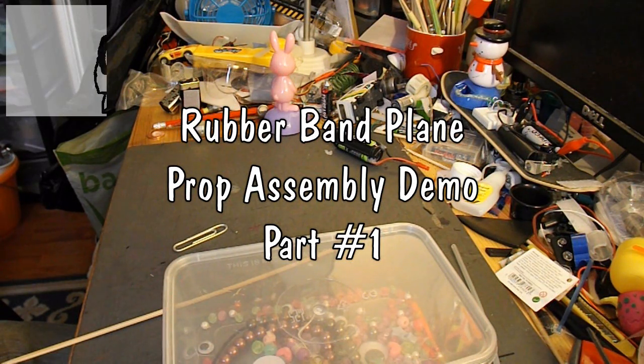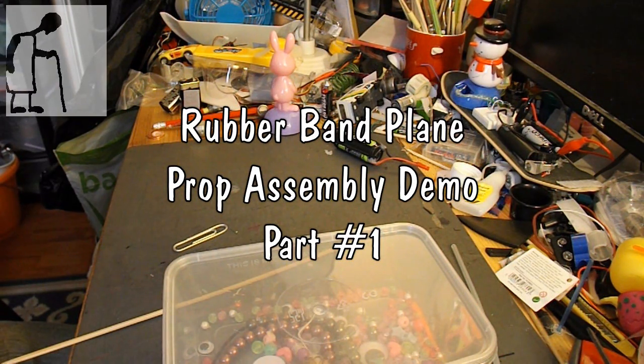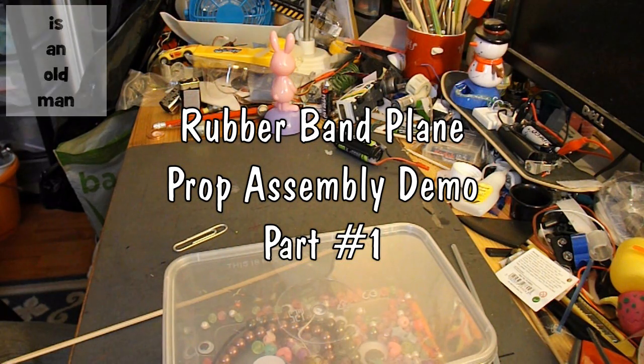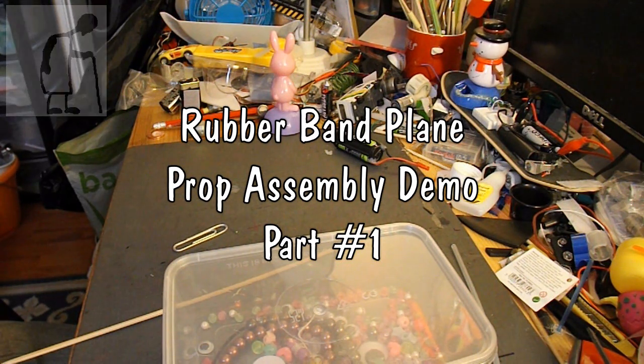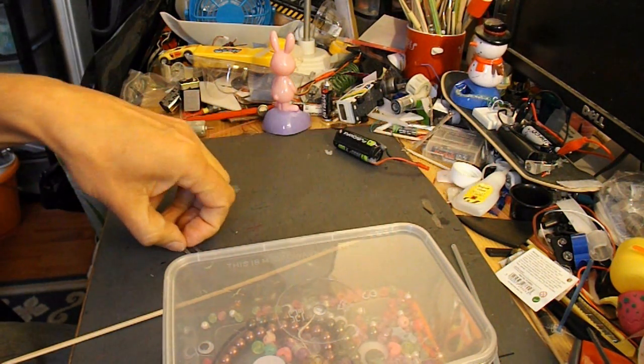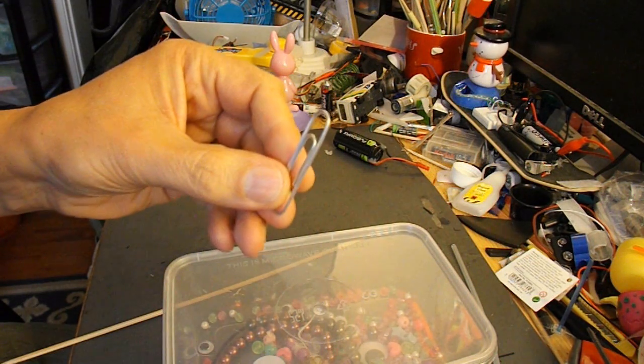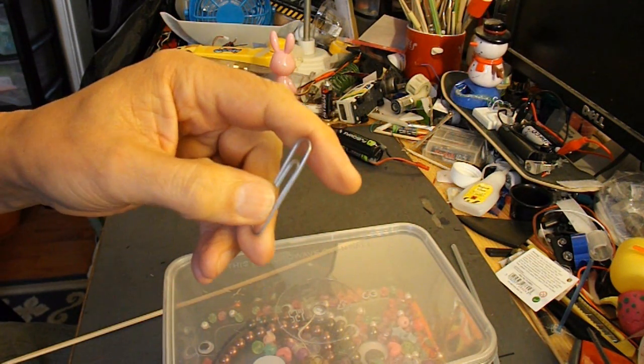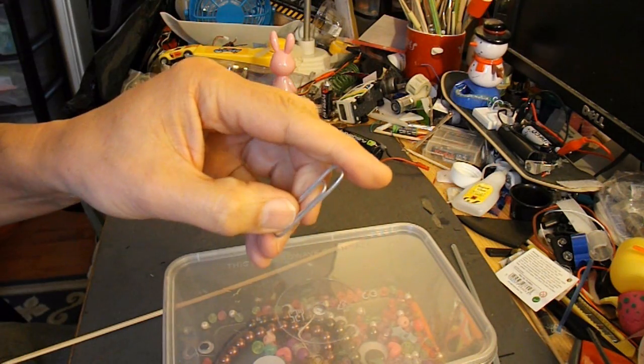Hi guys, I've had some feedback on some of my rubber band powered aeroplanes that people are having problems following the video where I bend up a paper clip to make the little bearing for the propeller.